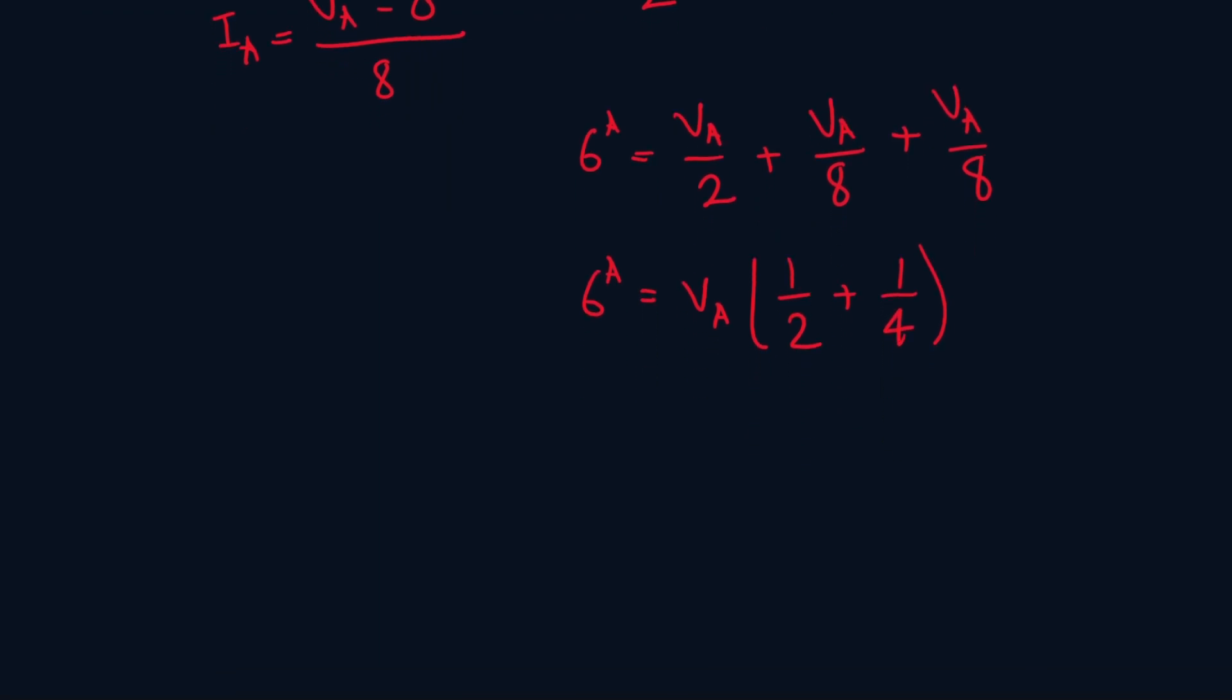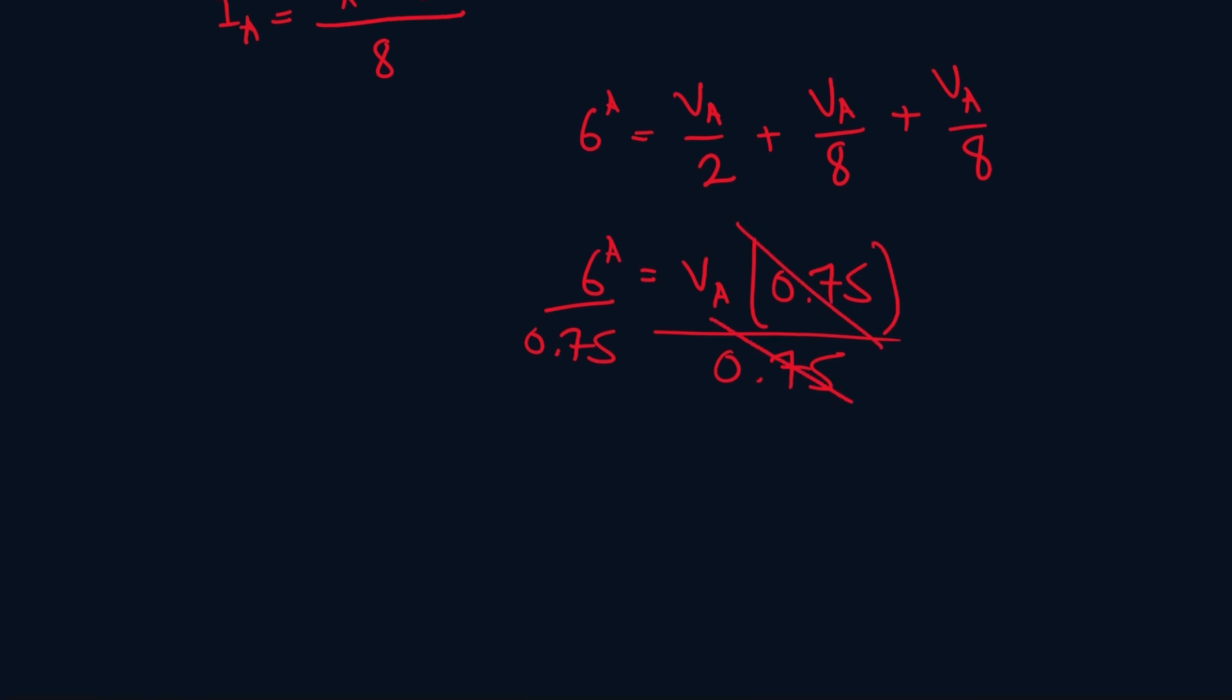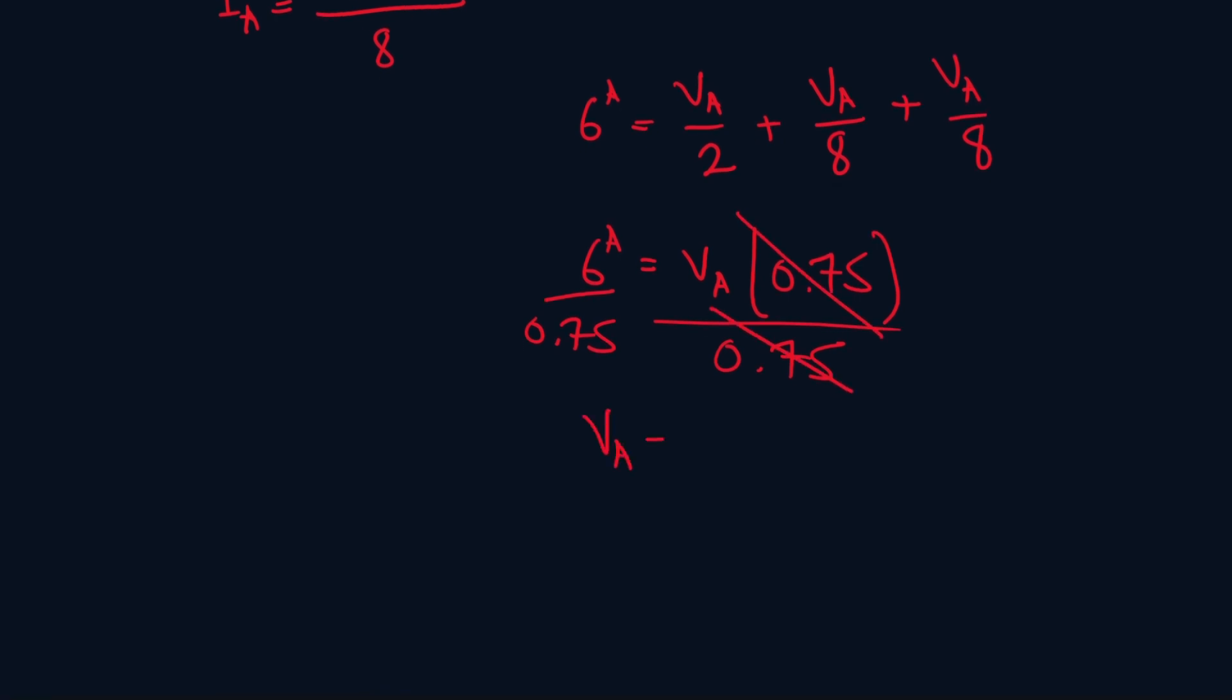And this whole thing, that's just 0.75. Now let's divide both sides by 0.75. This just cancels out. So VA will be equal to 8 volts.